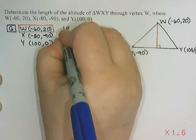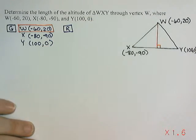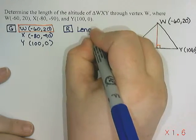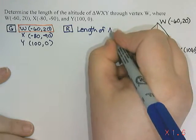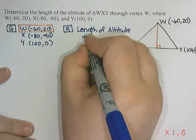The required - what is the question asking for? This question is asking me to find the length of the altitude through point W.